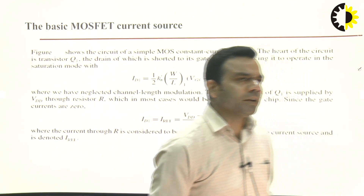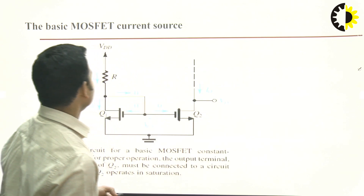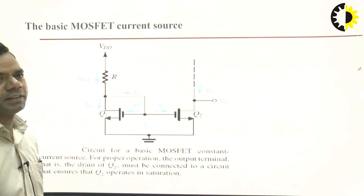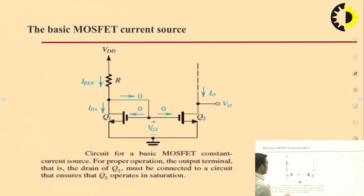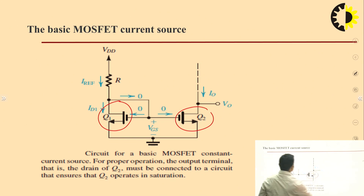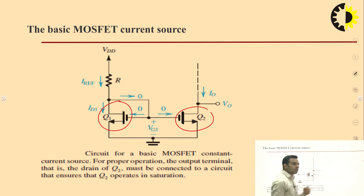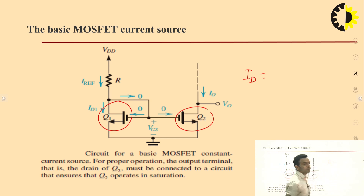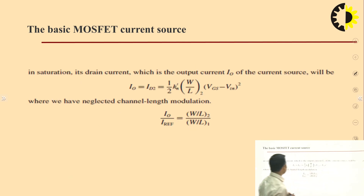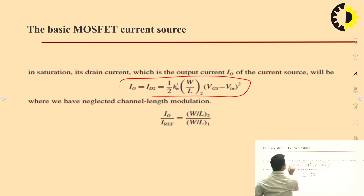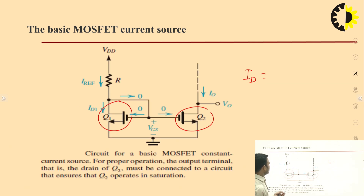We will discuss the basic MOSFET current mirror. You can see there are two MOSFETs. If I talk about the drain current of a MOSFET, it is equal to half k_n(W/L)(V_GS minus V_T) whole squared.